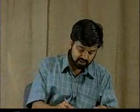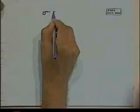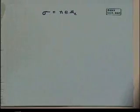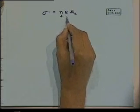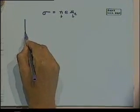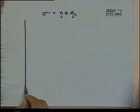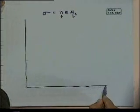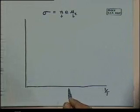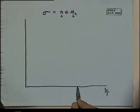Now we'll look at conductivity versus temperature. We know our equation sigma equals n·e·mu_e, and now we have the temperature dependence for n and the temperature dependence for mu. So we're going to plot sigma versus 1/T.